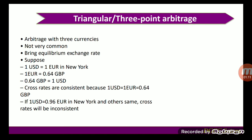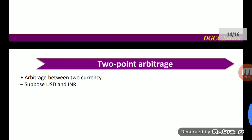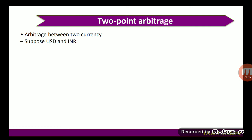However, if one US dollar equals 0.96 euro in New York while the other cross rates remain the same, the cross rates will be inconsistent. In this type of situation, triangular or three-point arbitrage can be observed in the forex market, though it is not very common.